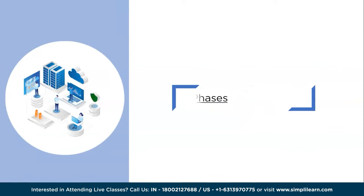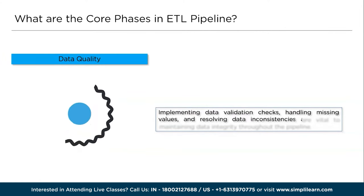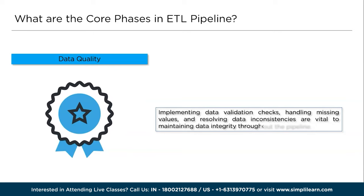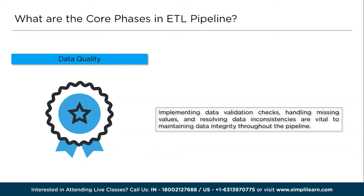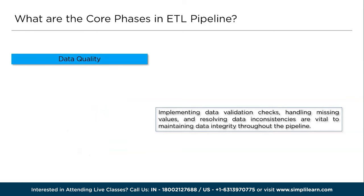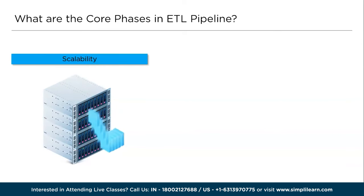Now let's explore some key concepts and best practices for building robust ETL pipelines. First, data quality: ensuring data quality is crucial for reliable analysis. Implementing data validation checks, handling missing values, and resolving data inconsistencies are vital to maintaining data integrity throughout the pipeline. Next, scalability: as data volumes grow exponentially, distributed computing frameworks like Apache Spark enable processing large datasets in parallel, allowing pipelines to handle increasing data loads efficiently.